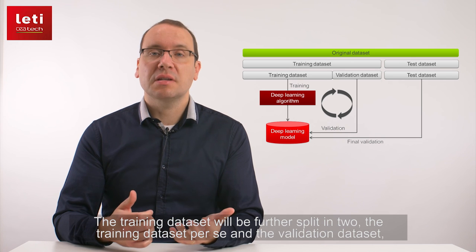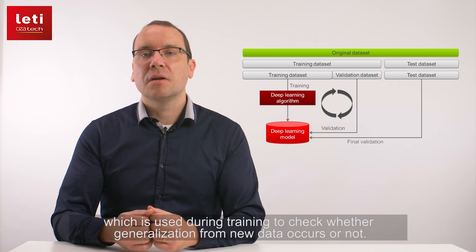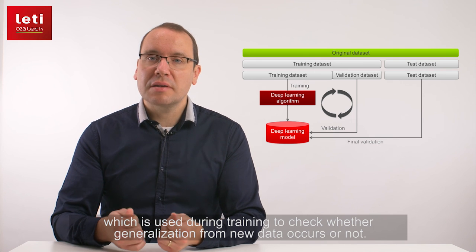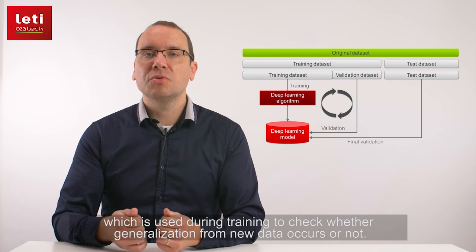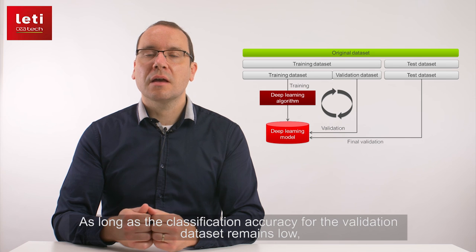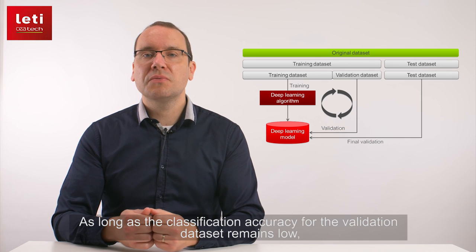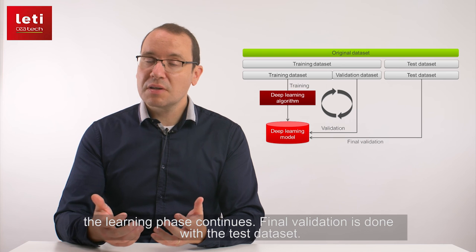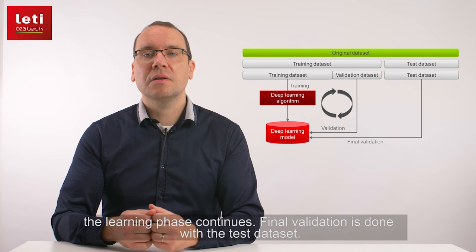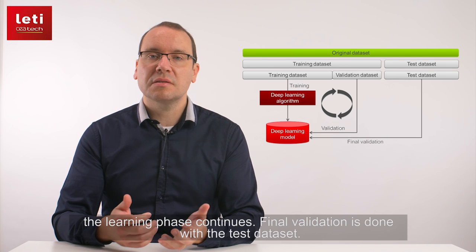The training dataset will be further split in two: the training dataset per se, and the validation dataset, which is used during training to check whether generalization from new data occurs or not. As long as the classification accuracy for the validation dataset remains low, the learning phase continues. Final validation is done with the test dataset.